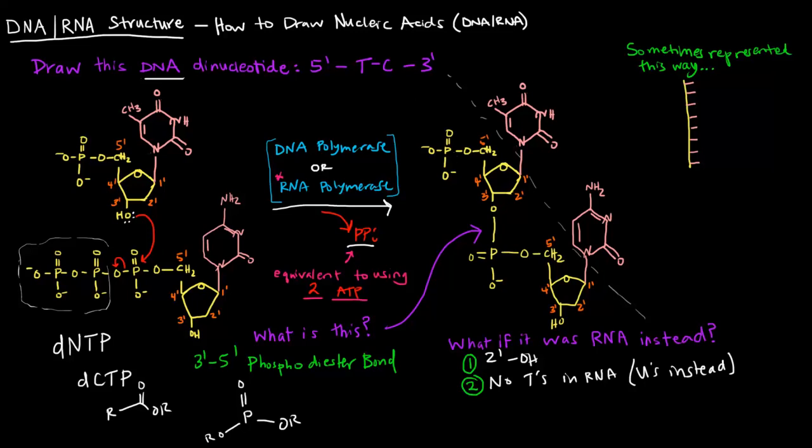So I want to label that here. This side of the dotted line is going to be the backbone. Specifically, it's a sugar phosphate backbone. And in the interior, this portion here, of course, are the nitrogenous bases.